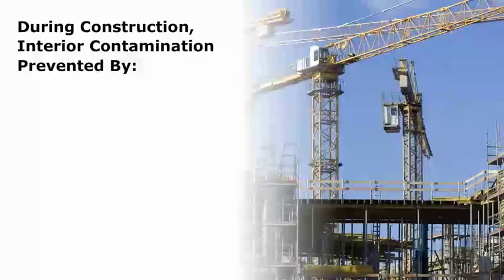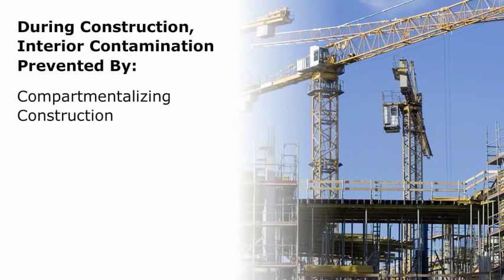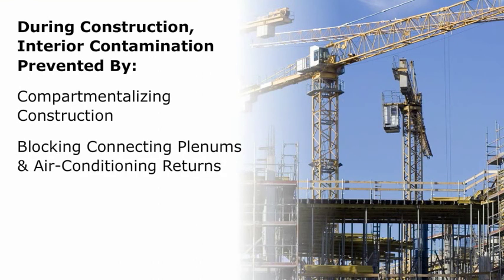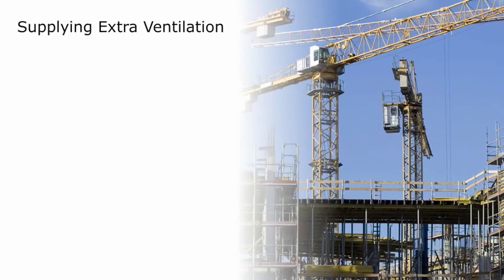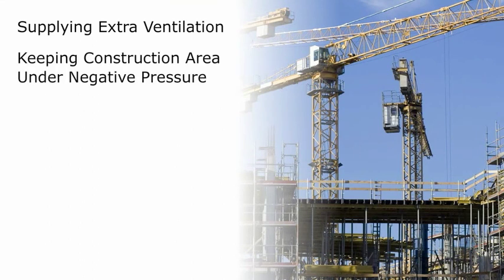During construction, interior contamination can be prevented by compartmentalizing construction with partitions and doors with closers, blocking connecting plenums and air conditioning returns, isolating work areas from occupied spaces, and supplying extra ventilation via window or door-mounted fans.